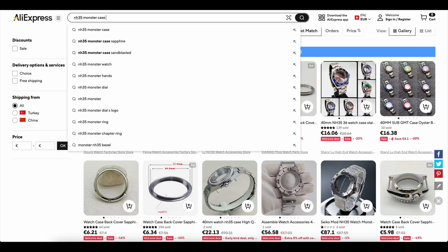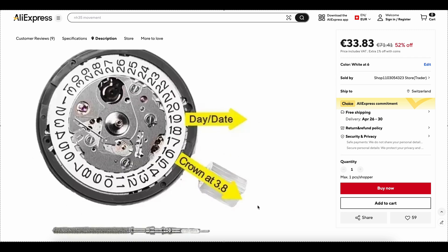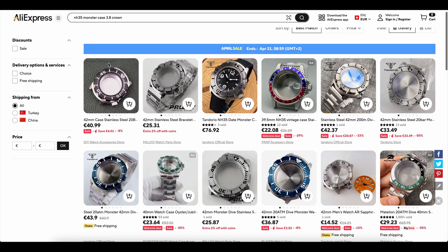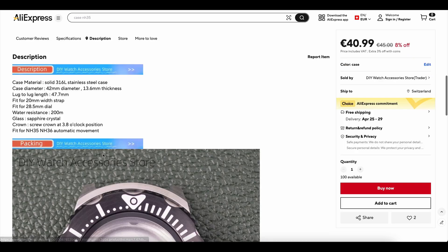But here's a crucial detail. The position of the crown. It might be at 3 o'clock, 3.8, 4.2, 6, or 9 o'clock. You need to get a movement with a matching crown stem position. For example, if your case says, for NH35, 3.8 o'clock crown. That's what you need.